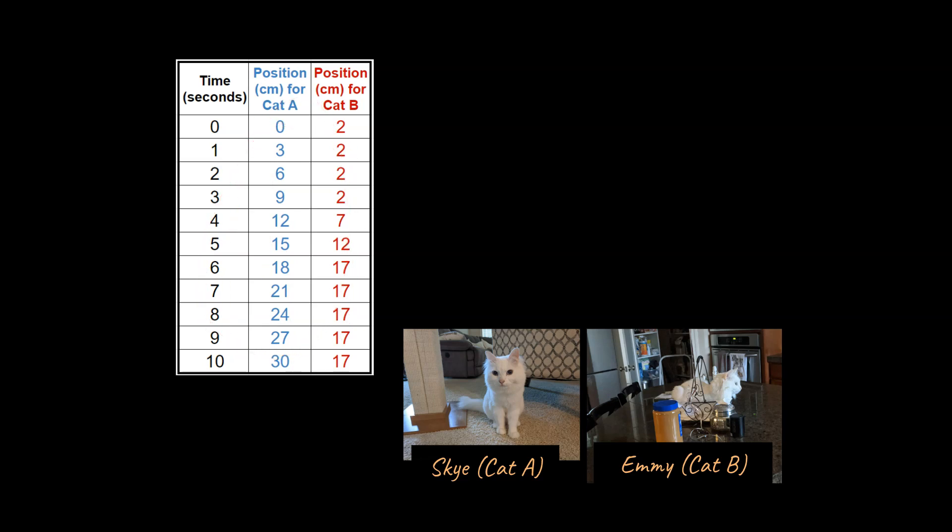So let's take a look at this data table, and I want you to just look at the data for a moment and see if you can notice patterns in the Cat A data and the Cat B data to kind of describe what's going on mentally. Hopefully it makes sense to say the Cat A data, Sky's data, is that he just moves at a slow pace throughout these 10 seconds.